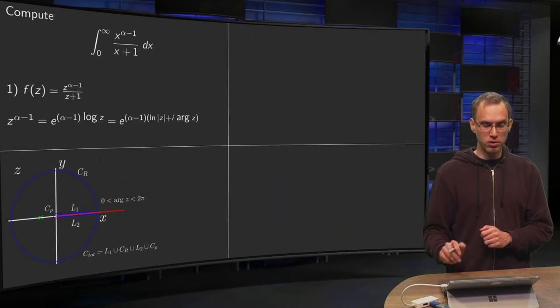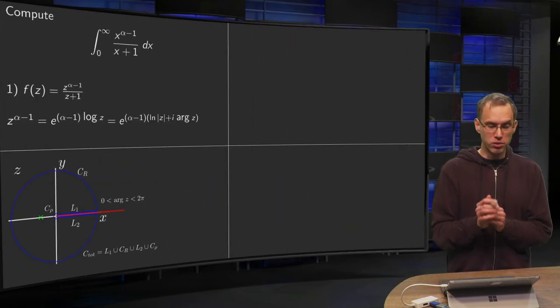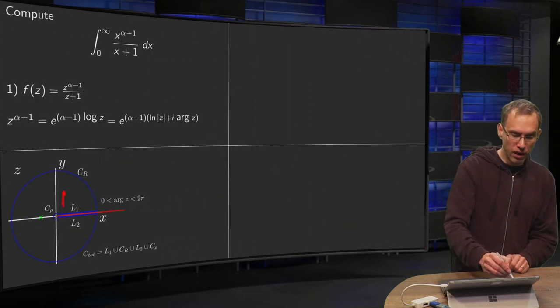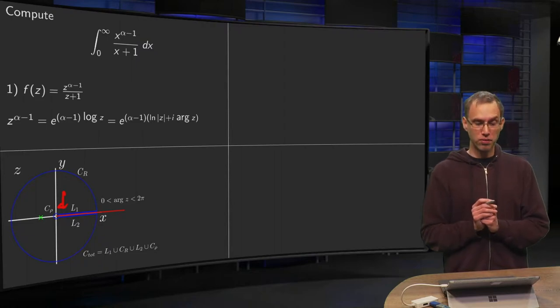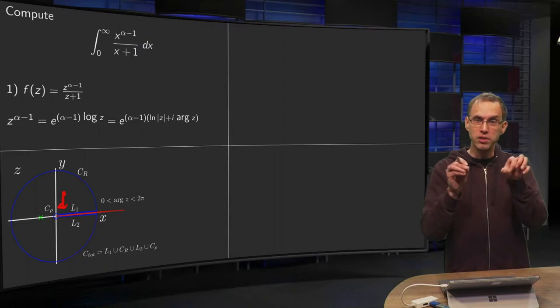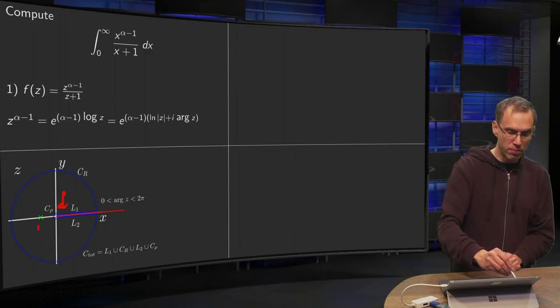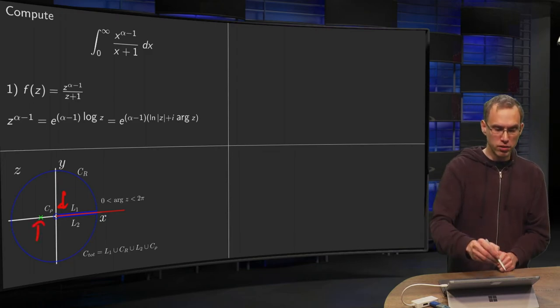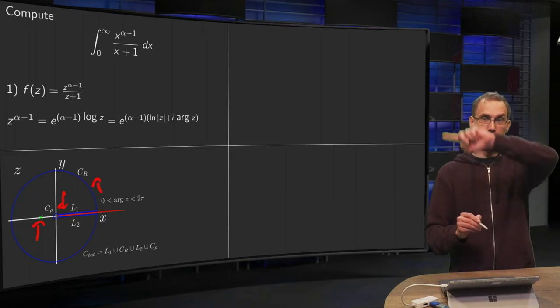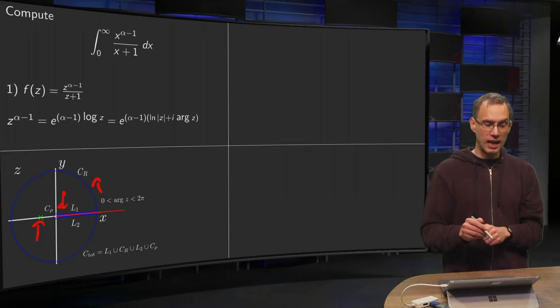So what are we going to do? Make the contour as follows. We want to have the positive x-axis, because that's what we eventually want to end up with. Then we have a problem at minus 1, so we start going around along a big arc.